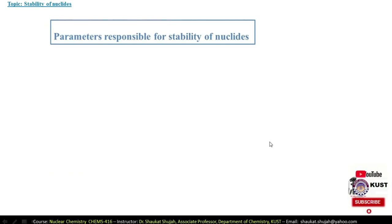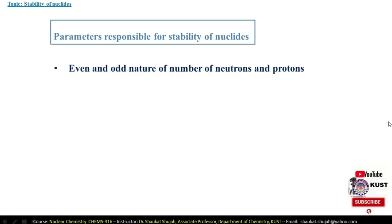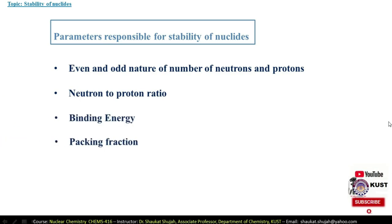It is logical to ask why only around 10% of the discovered nuclides are stable, or in other words, what are the various factors leading to nuclear stability. In-depth investigations on the properties of a large number of nuclides show that some of the important factors which contribute towards the stability of a nuclide are: the even or odd nature of the number of neutrons and protons, neutron to proton ratio, binding energy, packing fraction, and nuclear forces.